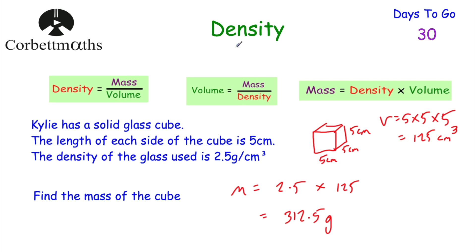So we've looked at density. Remember, density is a measure of how heavy a certain amount of material is — for example, how many grams per centimetre cubed. The formulas are: density equals mass divided by volume; volume equals mass divided by density; and mass equals density multiplied by volume. If you learn one of these, you can rearrange it to get the others.